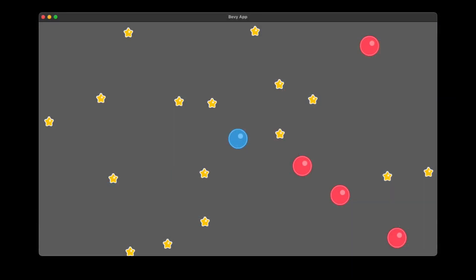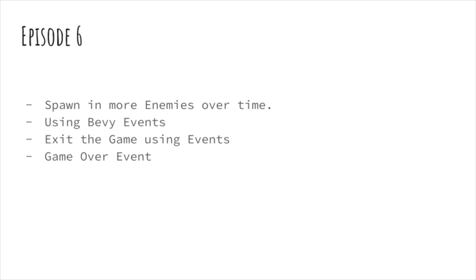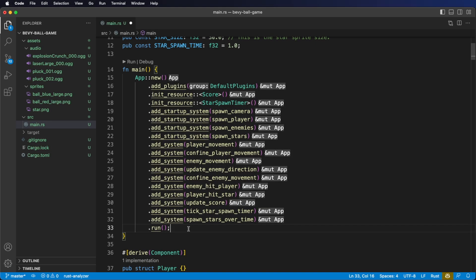Today, we're going to be continuing with our Bevy ball game project that we've been working on. We're going to be increasing the challenge of our game by spawning in more enemies over time. This really starts to make things fun and interesting and adds replayability to get a high score. Next, we'll look at Bevy events to exit out of the game. We'll also see how to make our own events when it's game over, and how to send and receive our own game over events. Let's hop back to our code and get started.